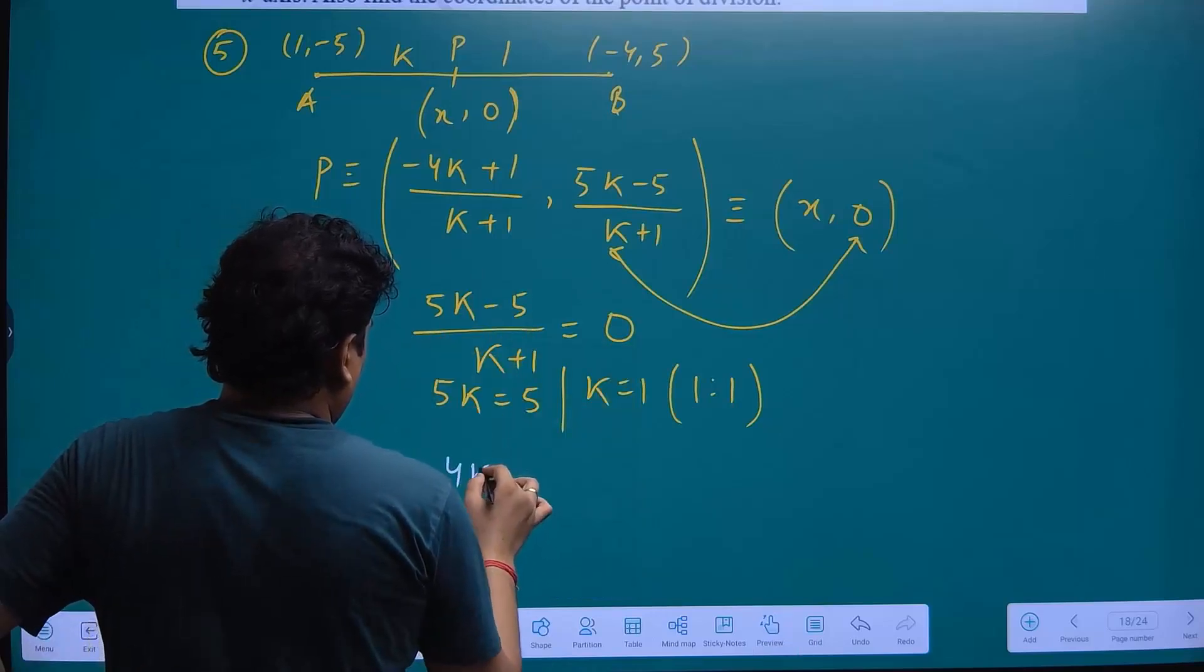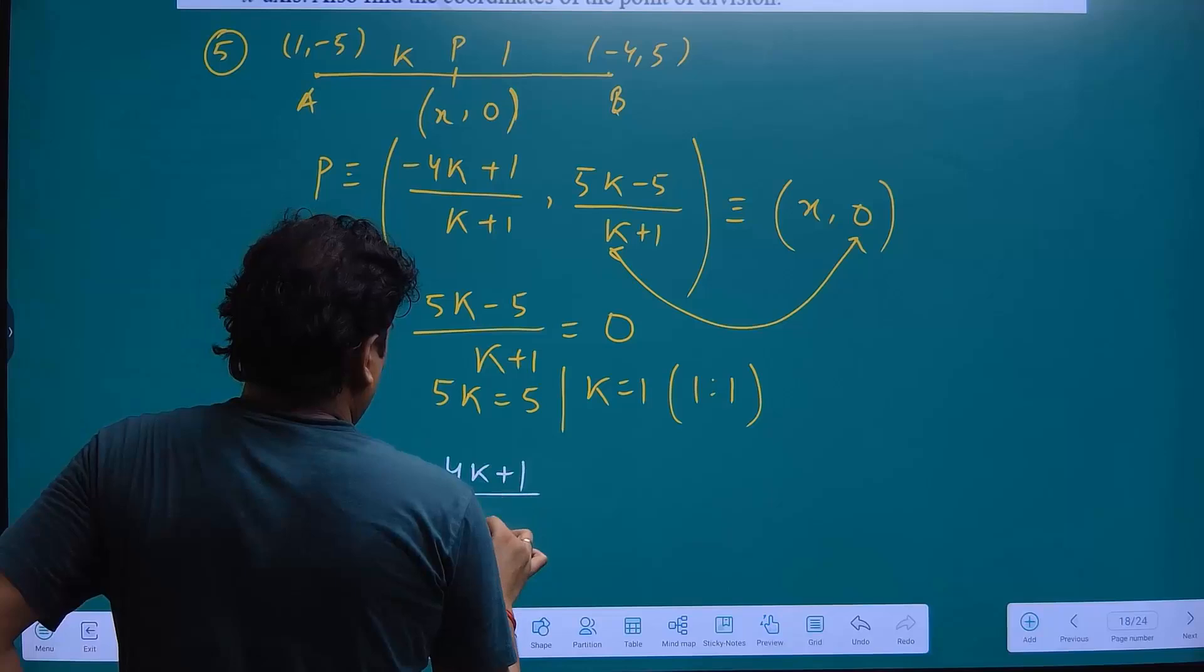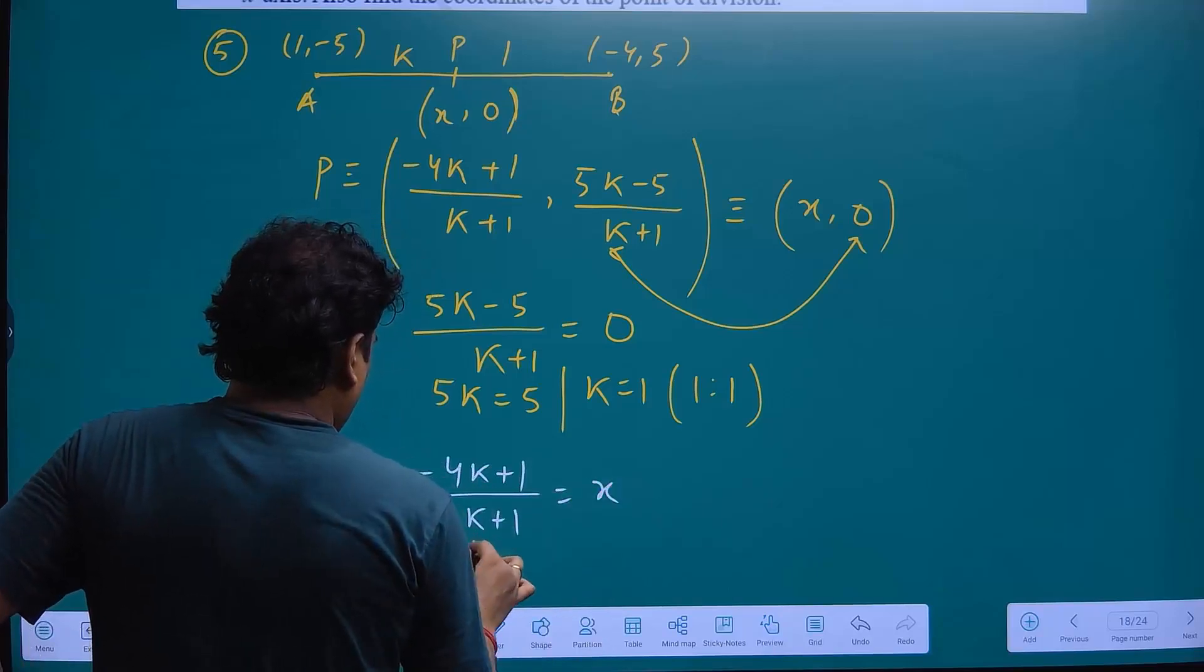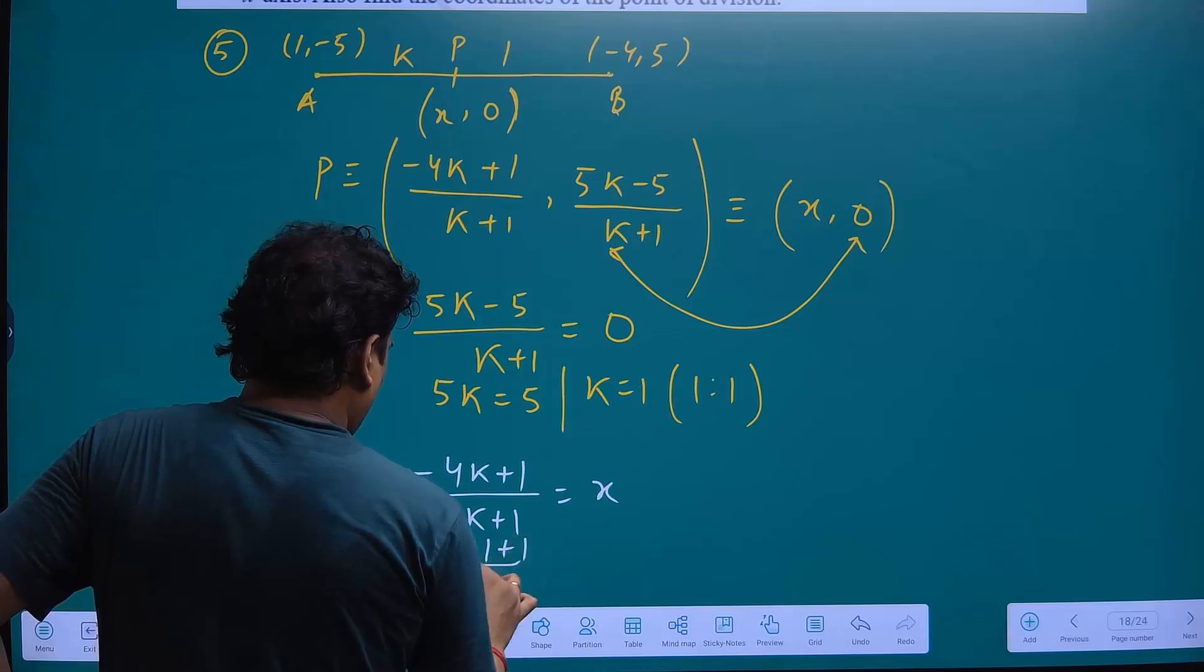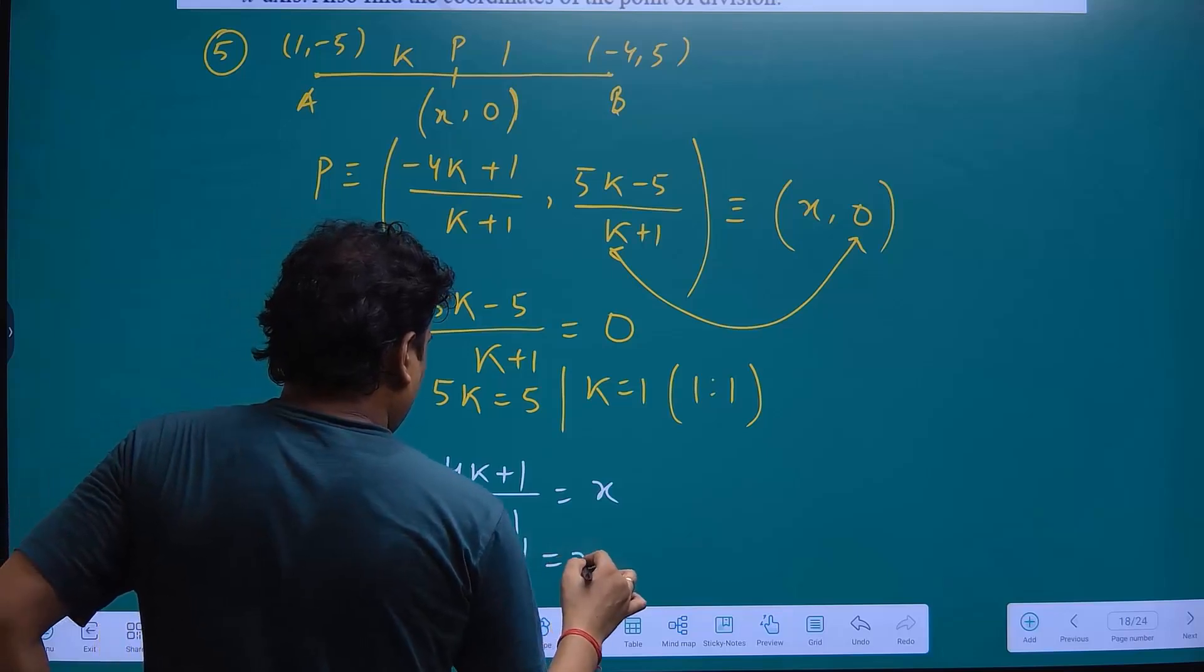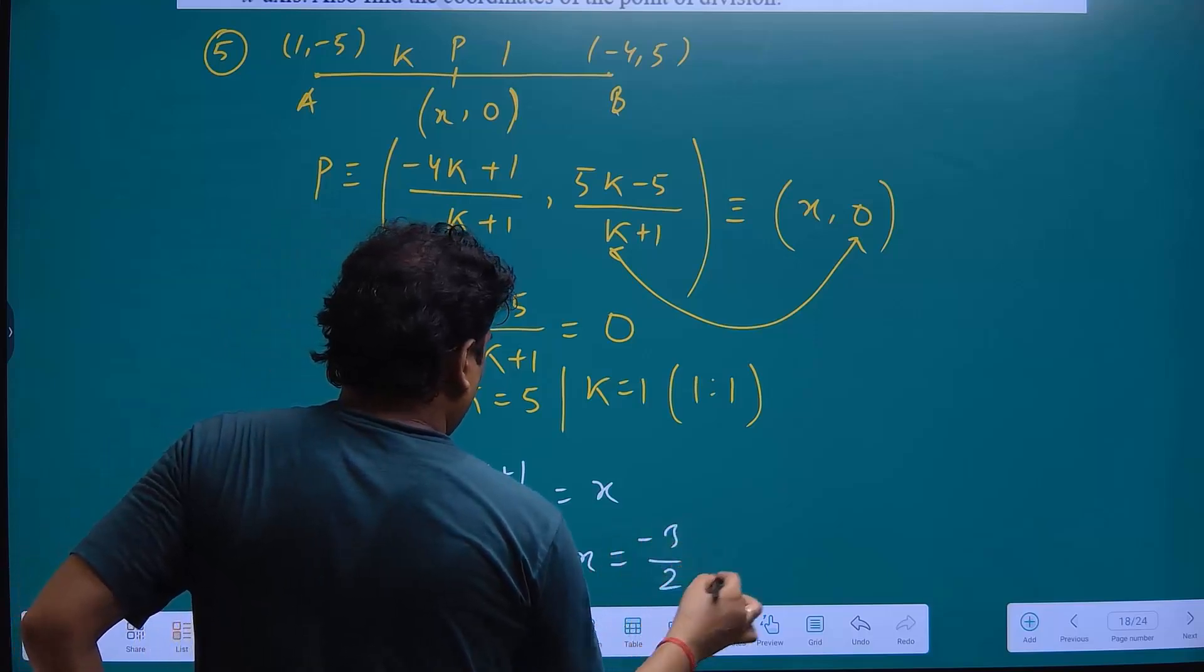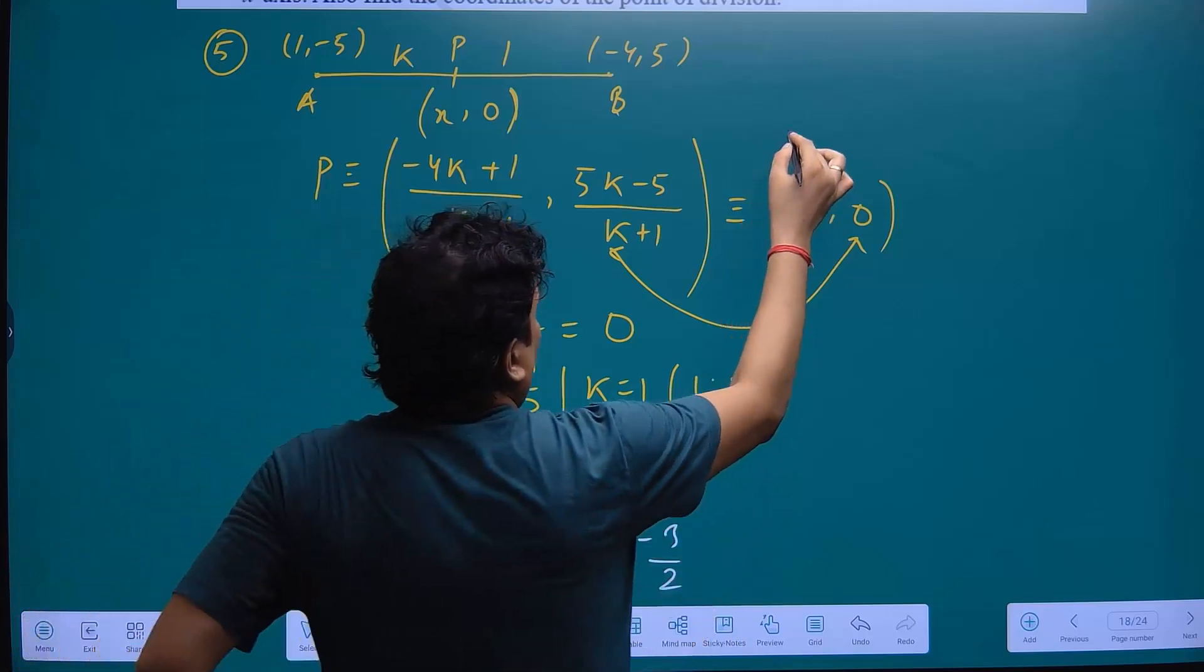So minus 4K plus 1 upon K plus 1 equal to X. So minus 4 into 1 plus 1 upon 1 plus 1 equal to X. So minus 4 plus 1 is minus 3 upon 2. So our coordinate is